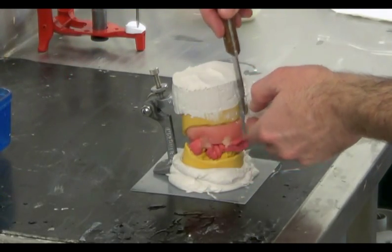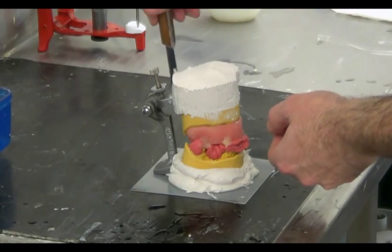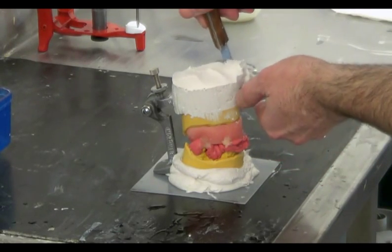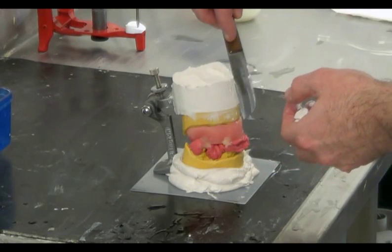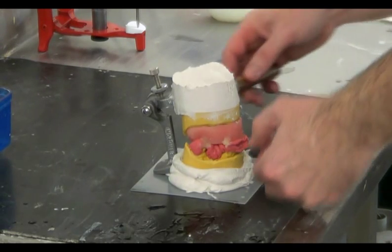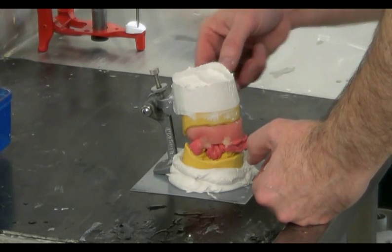We can use a spatula to smooth the plaster, attempting to leave the top and base horizontal and therefore level with the occlusal table. The side walls should be smoothed until they're parallel with the side walls of the model.